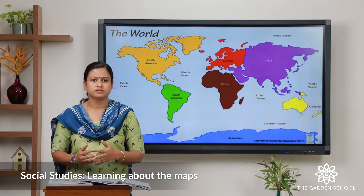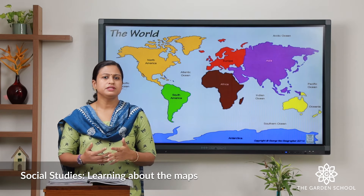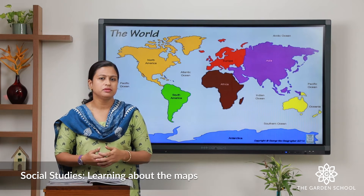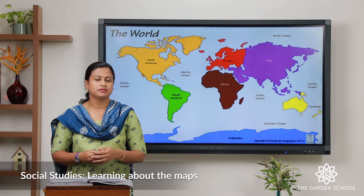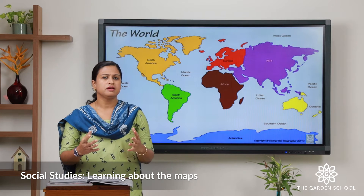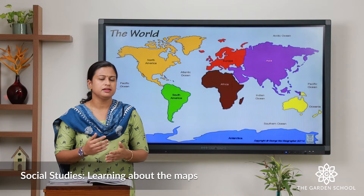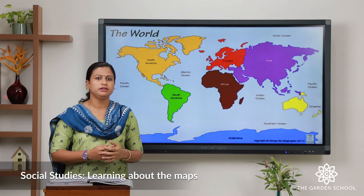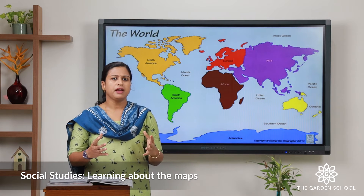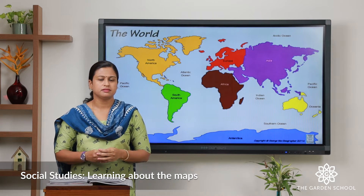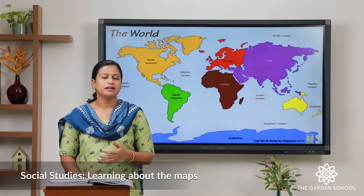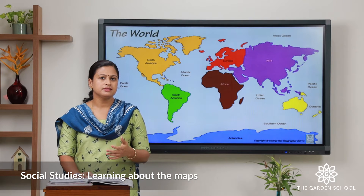These types of maps give you lots of information. Here you can see the roads, the buildings, landmarks, schools, fire stations, and so on. So kids, if you visit any place, what would you like to have with you — a globe or a map? We all know that a globe is very huge in size and it is difficult to carry, but we can carry a map easily with us.